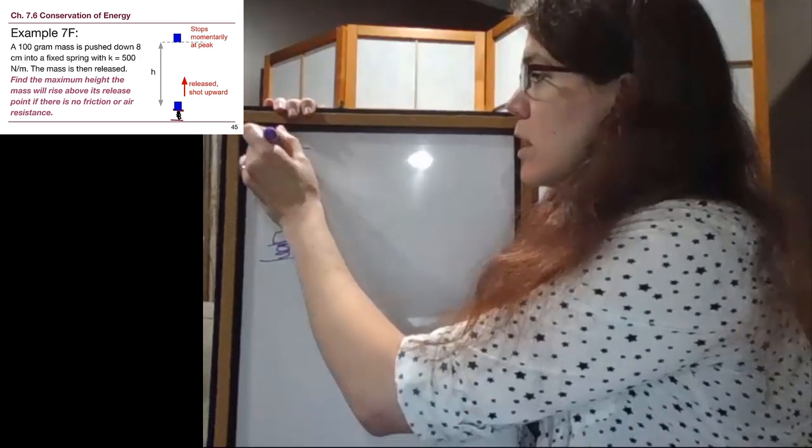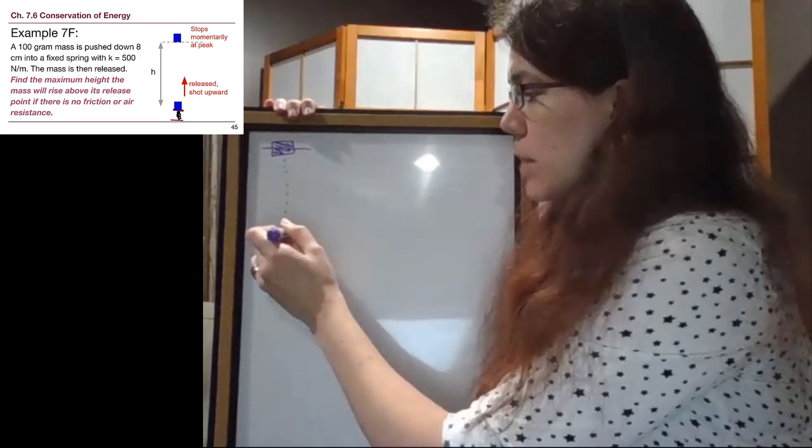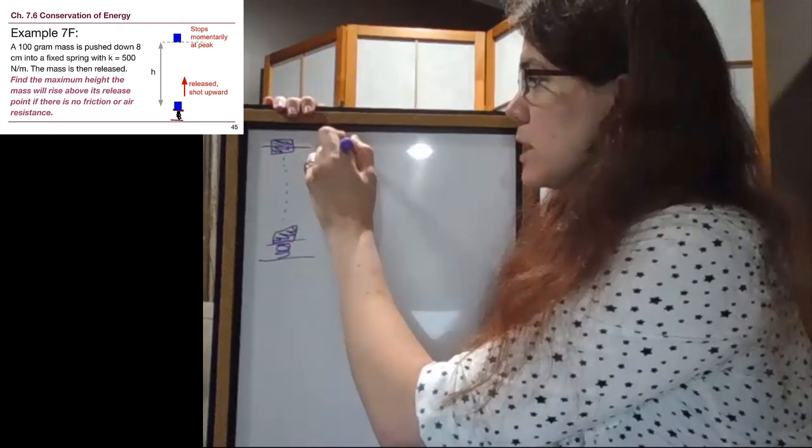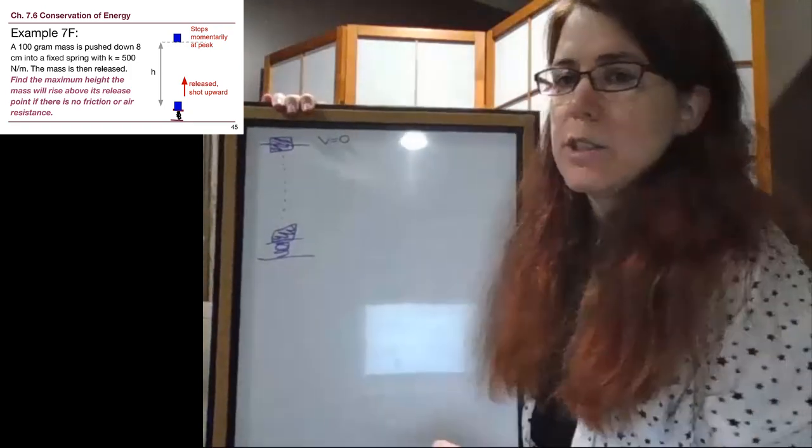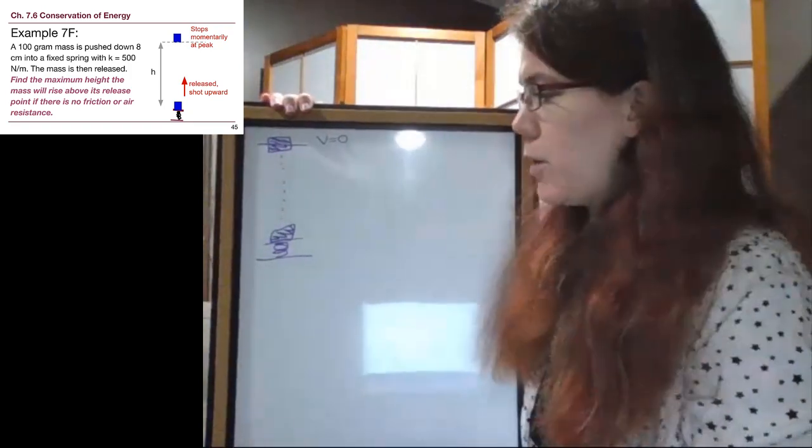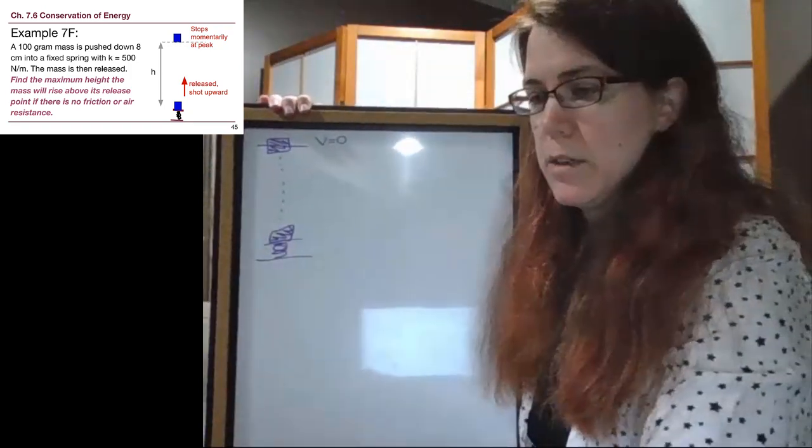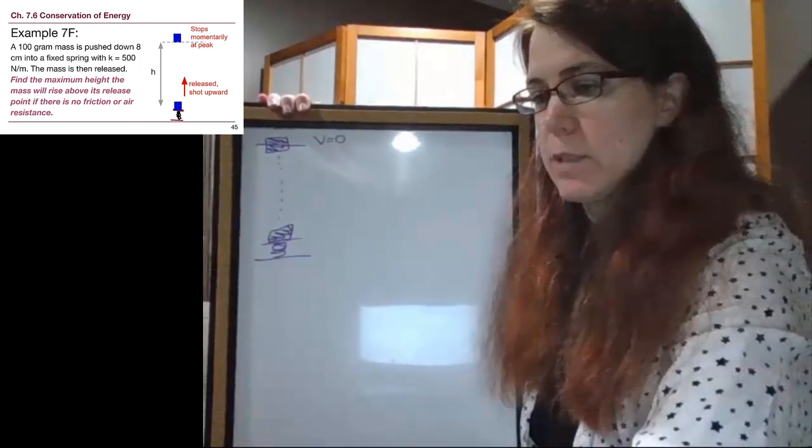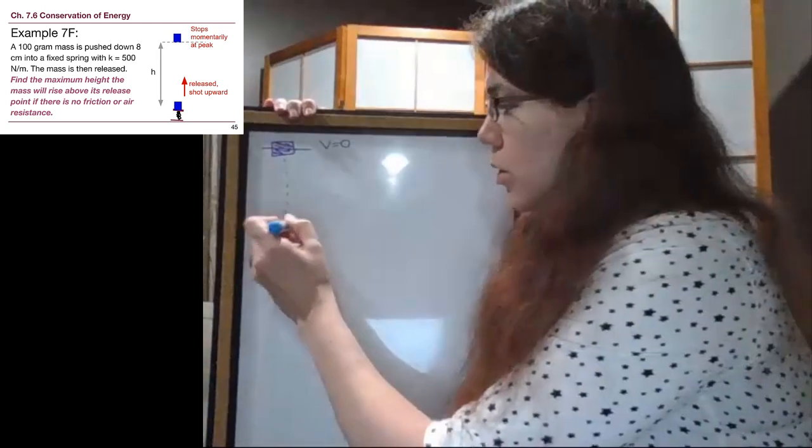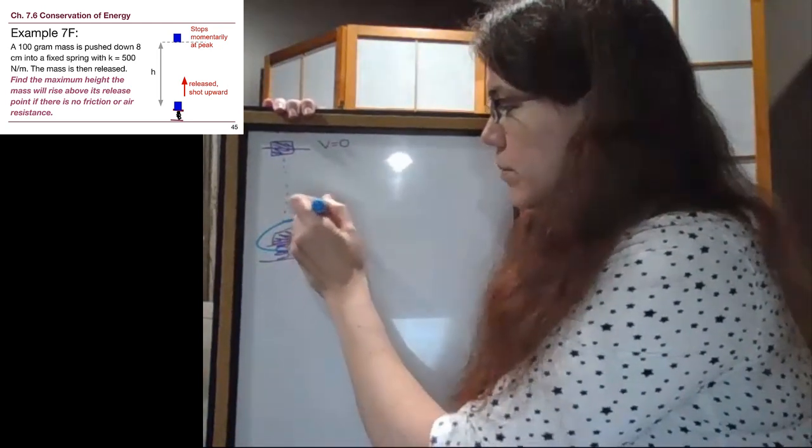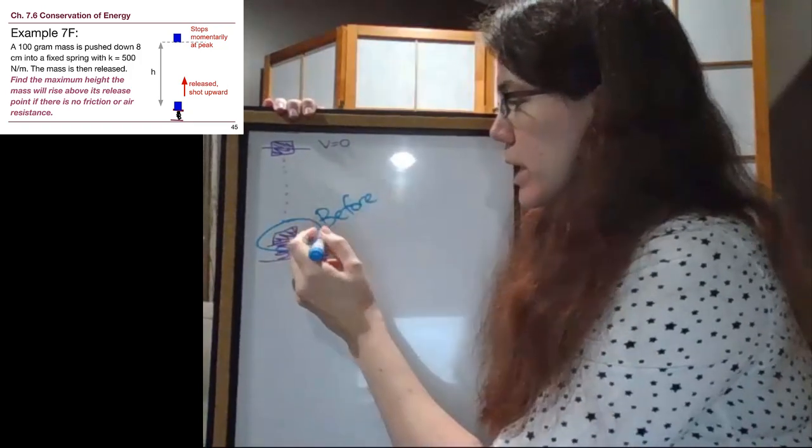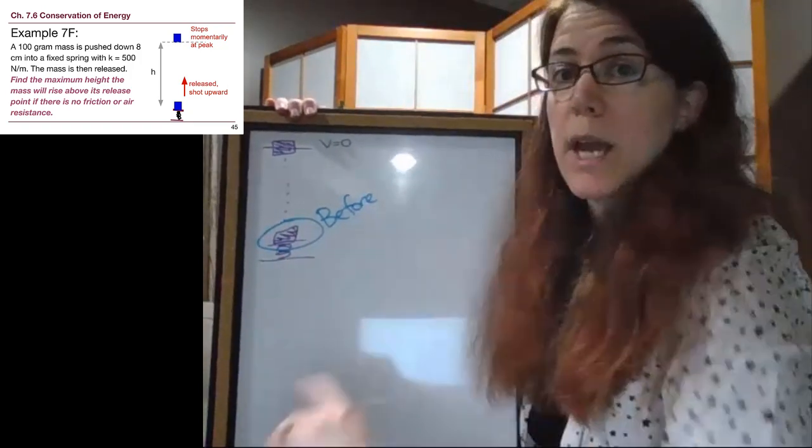We've talked about maximum height way back in Chapters 2 and 3, that maximum height is where the velocity is 0 in the vertical direction. And since this is only going up and down, the full velocity is 0 at that maximum height. So this situation before is when we are pushed into the spring already and we are not moving.